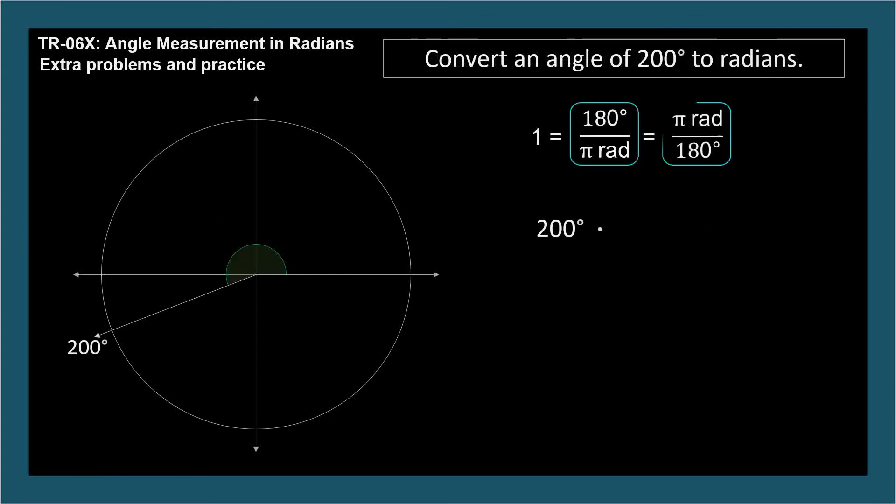Convert an angle of 200 degrees to radians. The conversion factor is π radians over 180 degrees, so the degrees cancel. The answer is approximately 3.49 radians.